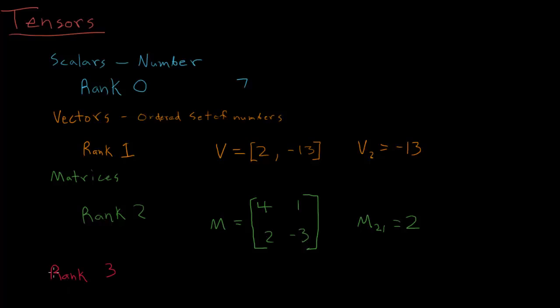So once you get to a rank three tensor, things start getting a little bit more abstract and it's harder to see all of the elements at once. But it's really the same sort of thing. It's just an extension of previous ideas.